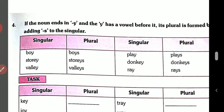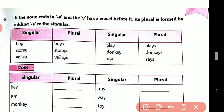Rule number four: if the noun ends in -y and the y has a vowel before it — and we know that a, e, i, o, u are the five vowels — its plural is formed by simply adding -s to the singular.